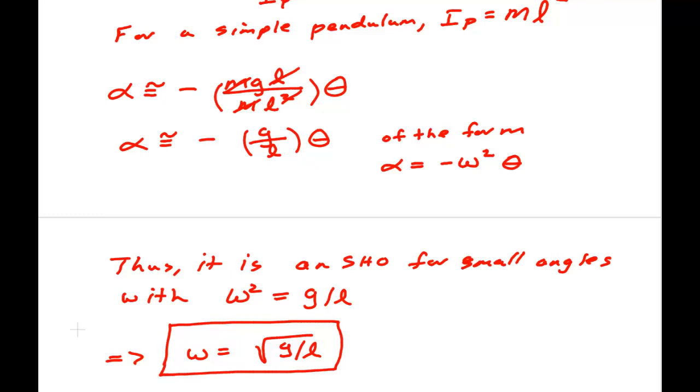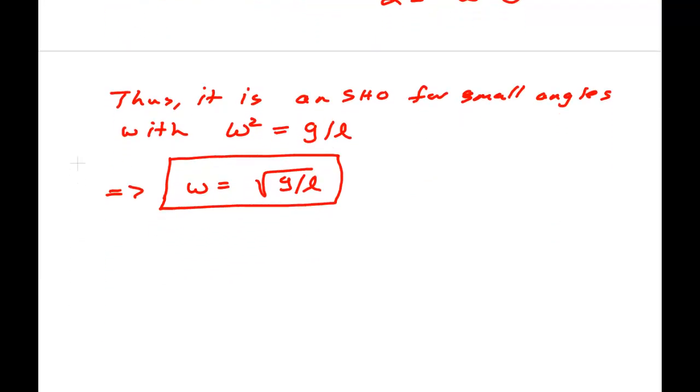We get the other results just by applying trigonometry. Omega T is 2π. Therefore, T is 2π over omega is 2π times the square root of L over g.